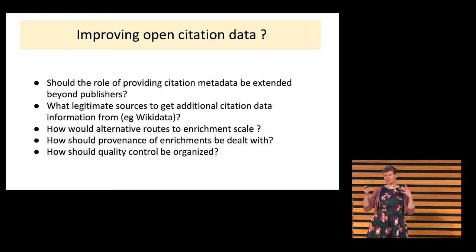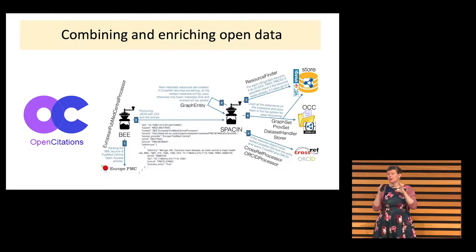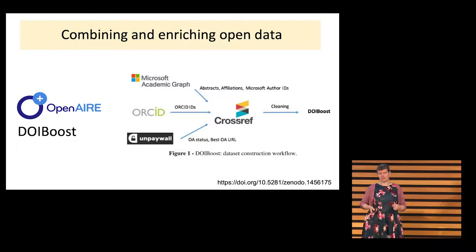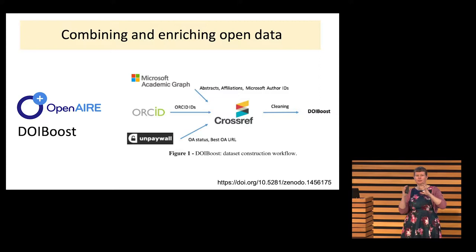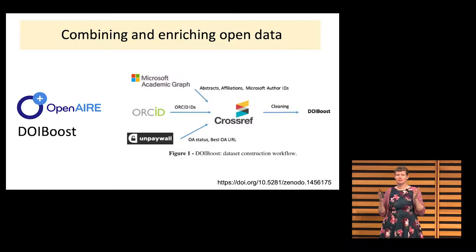Because all these initiatives — there are really interesting things happening. I already mentioned the Open Citations Initiative, using a lot of open tools and platforms to bring together information about citations and references. Another initiative, the DOI Boost from OpenAIRE, also starts with Crossref entries and then matches those with additional information — from ORCID, from Unpaywall, from Microsoft Academic Search for the affiliations — and they build a really rich database. This is getting close to really an open citation index.